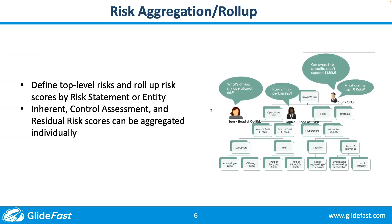Another feature is risk aggregation and roll-up. We can define top-level risks and roll up the risk scores for child risks up to those top-level risks. Typically, you'll define risk statement or entity hierarchies to establish parent-child relationships for risks, and you can roll up inherent, control assessment, and residual risk scores individually onto those parent-level risks.